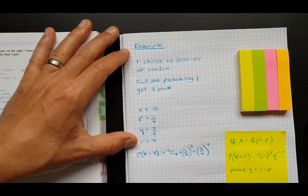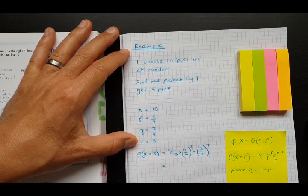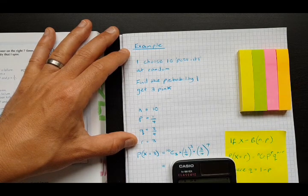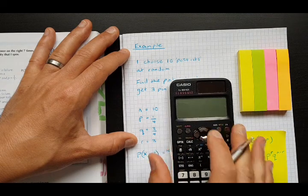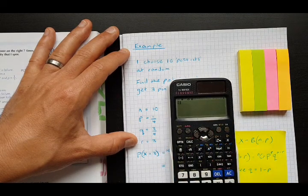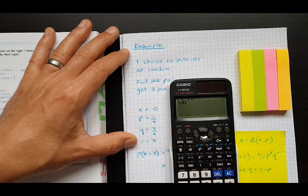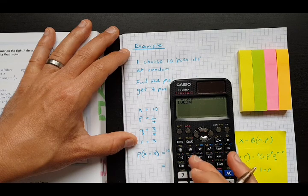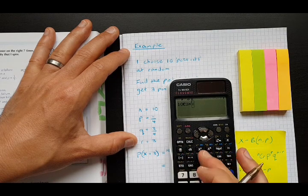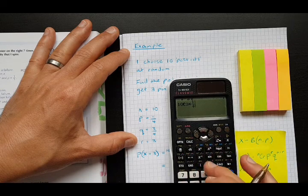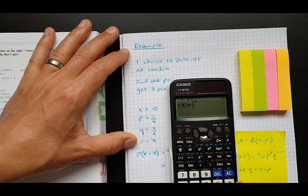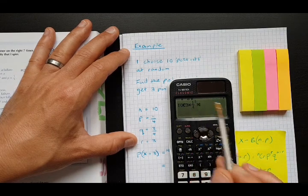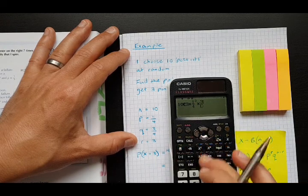Now if you need a reminder on your calculator, the way that we put in n choose r is that we use shift divide. So 10 shift divide three, so that will give you your 10 choose three. And then we can put in the rest of our values. You don't need brackets here, but just do it carefully. Make sure it's a quarter to the power of three and not just a one on top to the power of three.